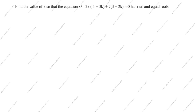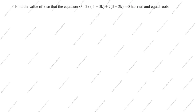Hi friends, welcome to my channel Excellent Ideas and Education. Today we are going to solve this polynomial problem. This is a very important problem: find the value of k so that the equation x squared minus 2x(1 plus 3k) plus 7(3 plus 2k) equals 0 has real and equal roots. Now we will see how to solve this problem.